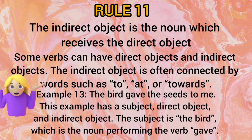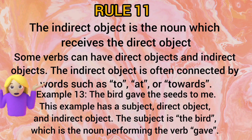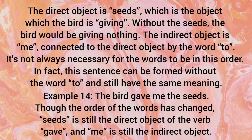Rule number 11: The indirect object is the noun which receives the direct object. Some verbs can have both direct and indirect objects. For example, in 'The bird gave the seeds to me,' the subject is 'the bird,' the direct object is 'seeds' — what the bird is giving — and the indirect object is 'me,' connected to the direct object by the word 'to.' The order can change: 'The bird gave me the seeds' — but 'seeds' is still the direct object and 'me' is still the indirect object.